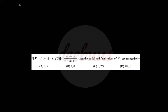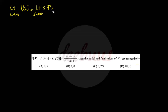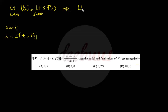Another two-mark question: if F(s) = L{f(t)} = 2(s+1)/(s² + 4s + 7), find the initial and final values of f(t) respectively. Applying initial and final value theorems — first we check stability: zero at s = −1, poles at s = −1 ± j1.73, so the system is stable.